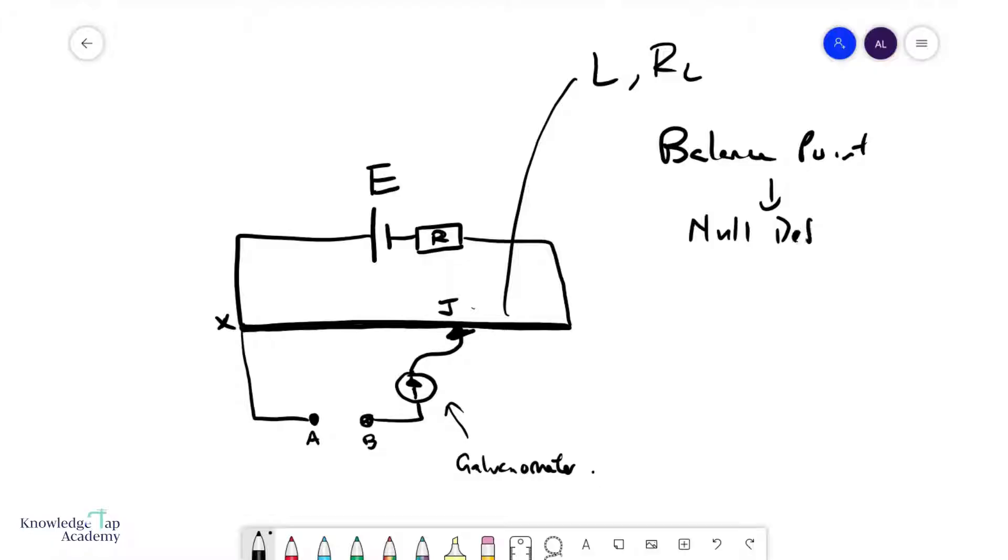A null deflection is essentially saying that there is no current through the galvanometer. The balance point is that one special point where this happens. Let's assume that the balance point occurs when the movable contact is at j over here.